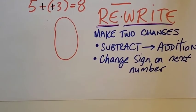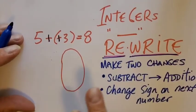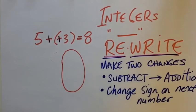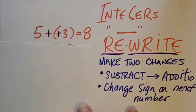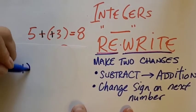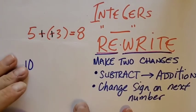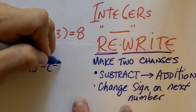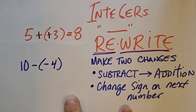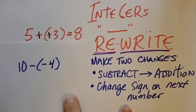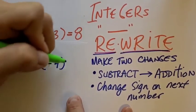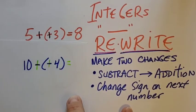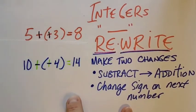Let me show you another one real quick. Let's go with 10 minus negative 4. If we follow the steps — this is a rewrite, we're going to change two things. We change the subtraction to addition, then we change the sign on the next number. So it says 10 plus 4. What's 10 plus 4? 14.